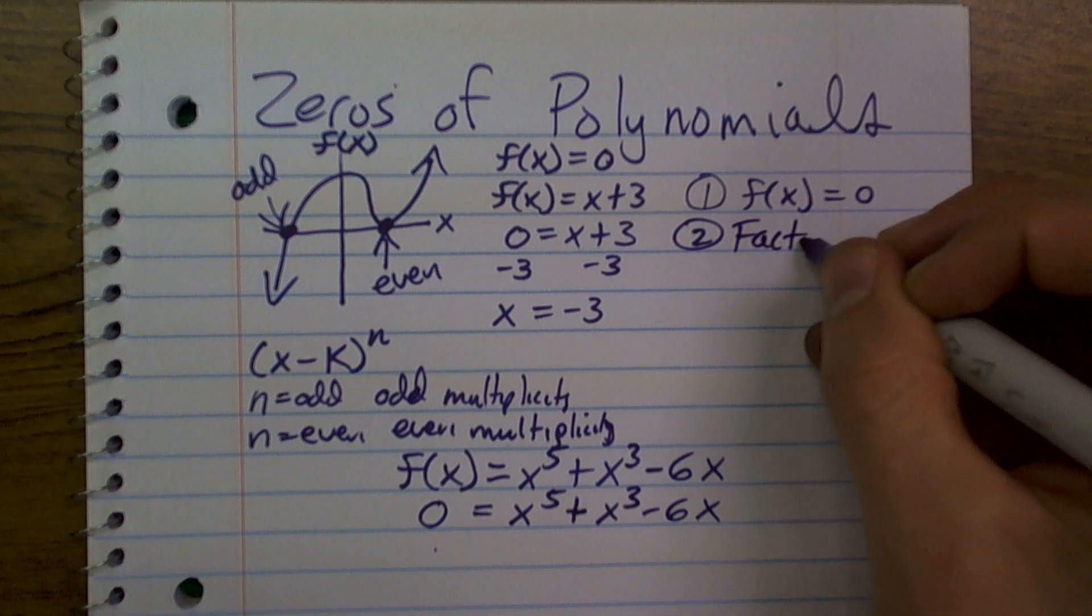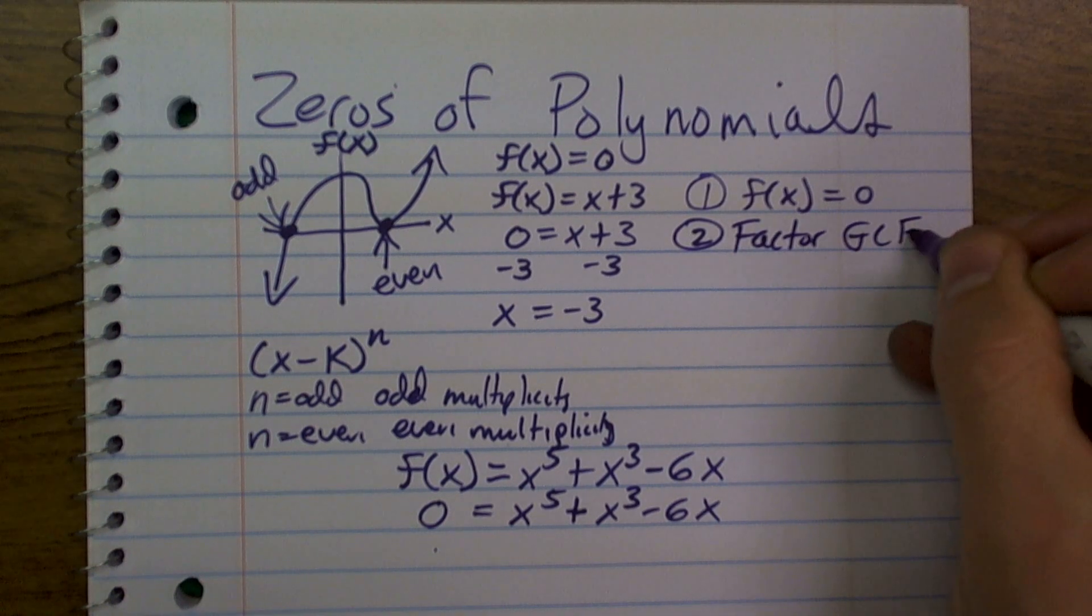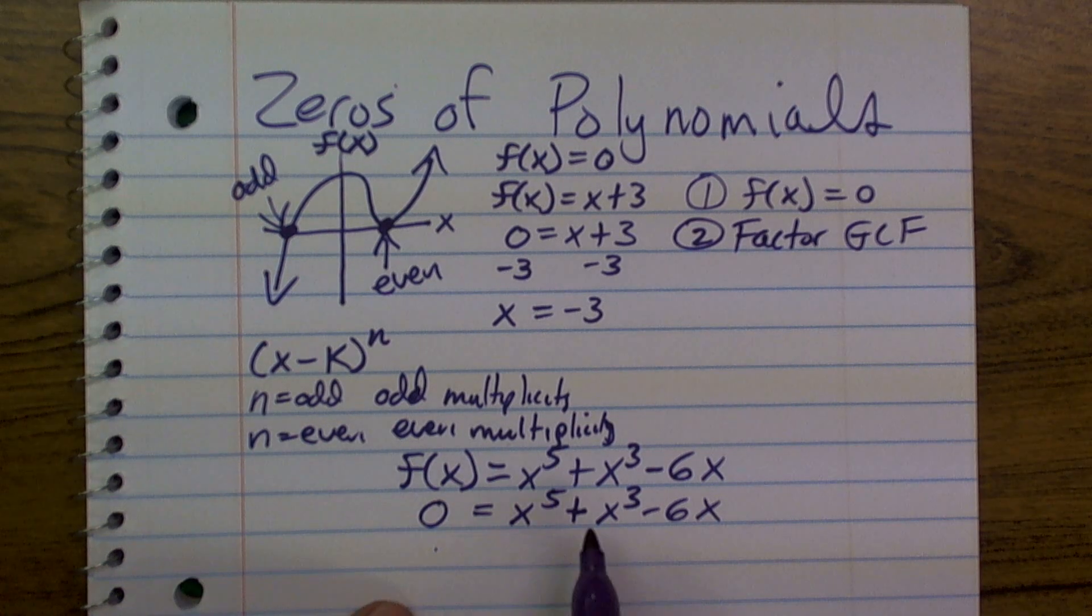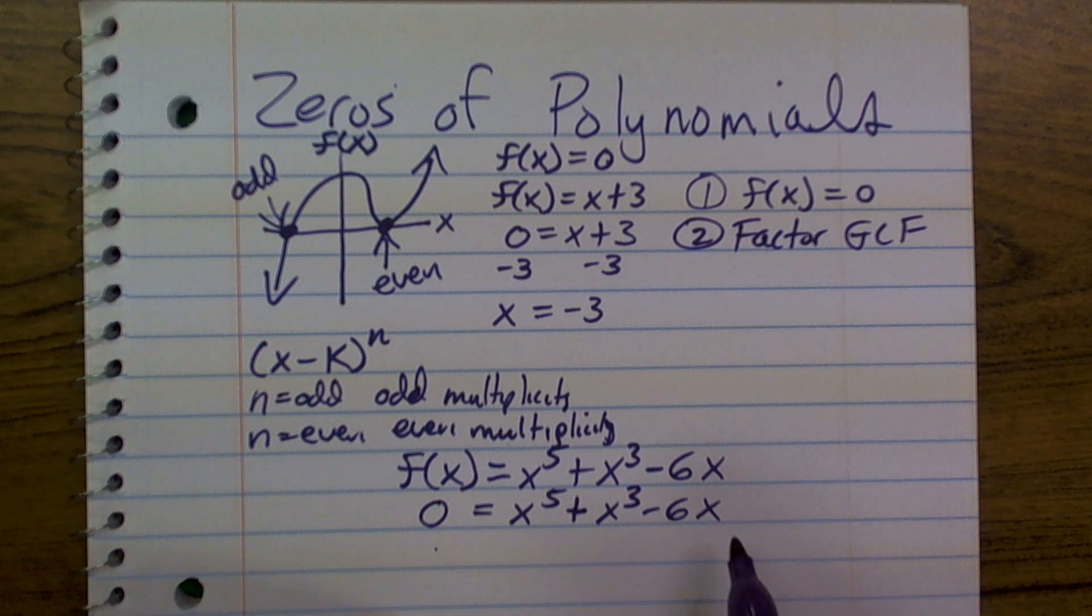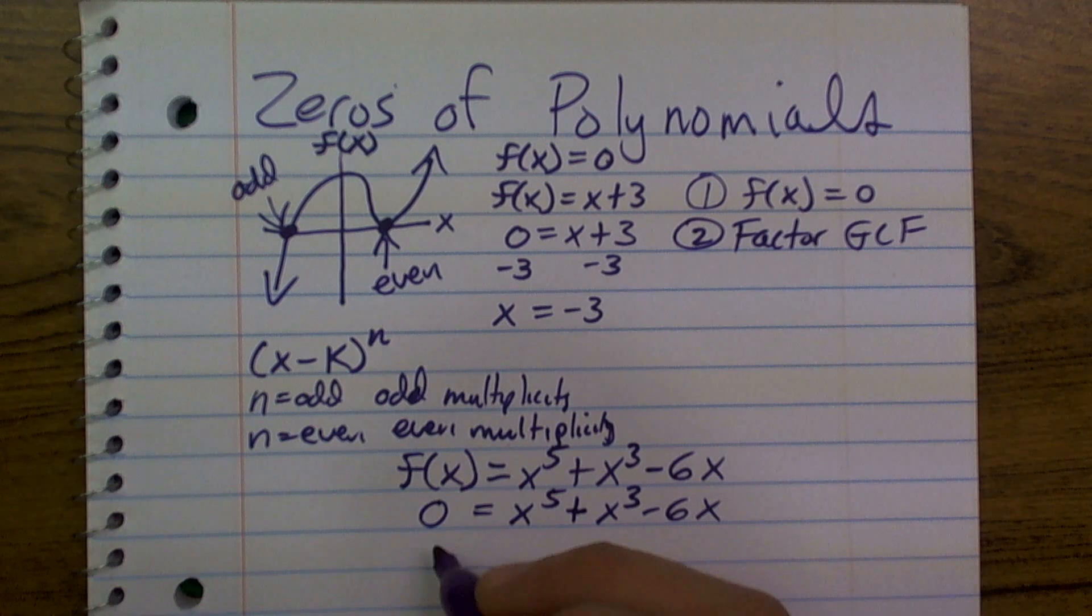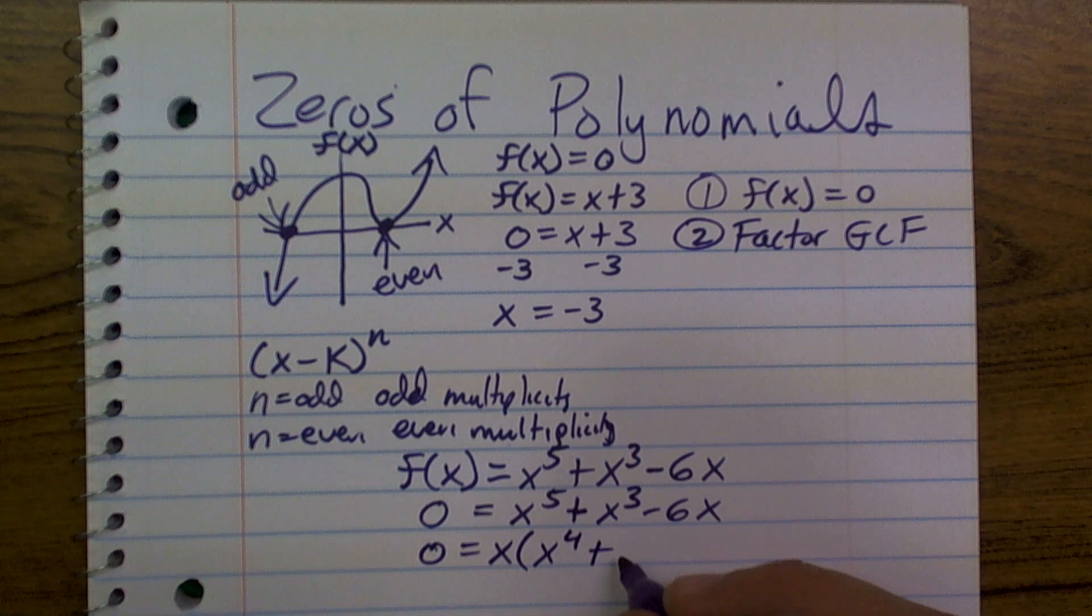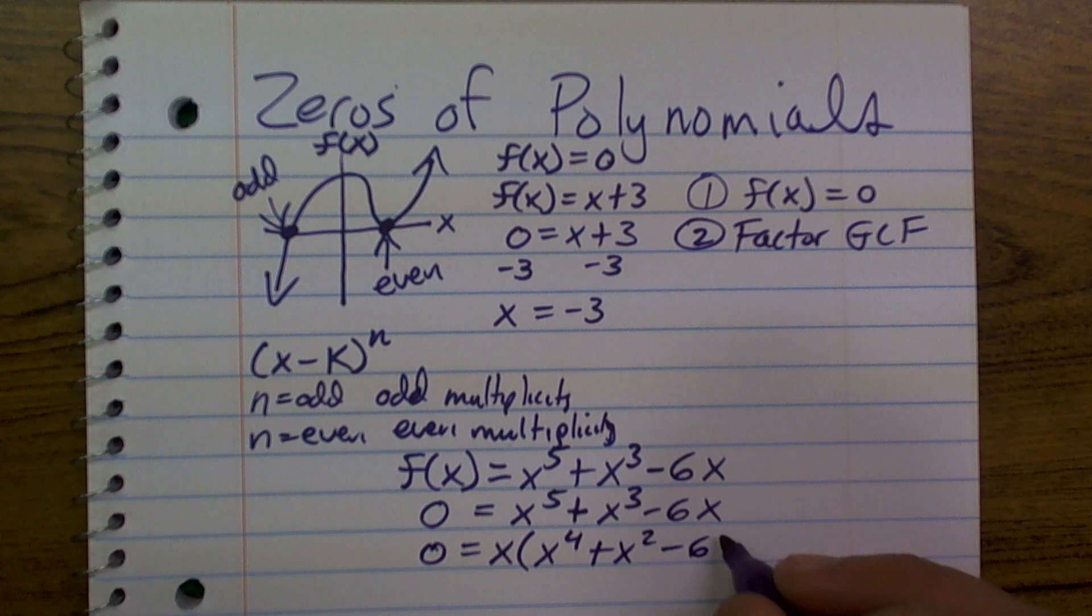So, I'm just going to write factor your greatest common factors or any kind of common terms you have. Well, we notice that all three of these terms you can factor out an x. So, I'll have zero equals x times x to the fourth plus x squared minus 6.